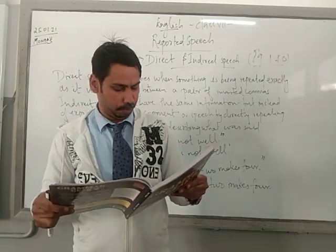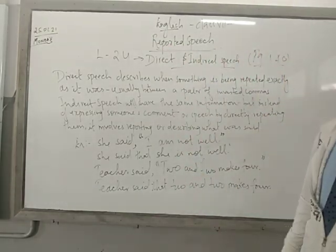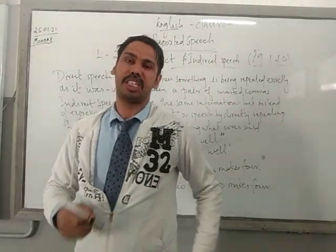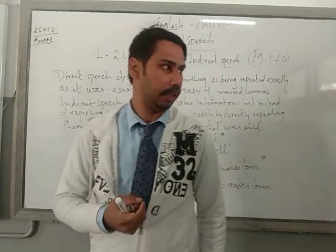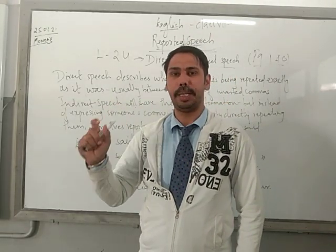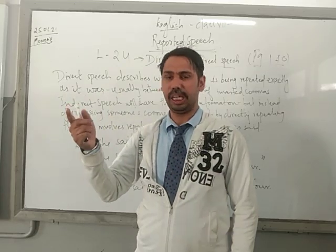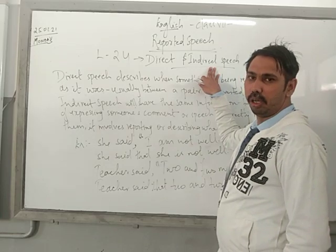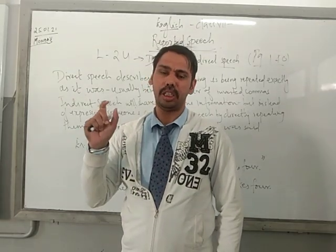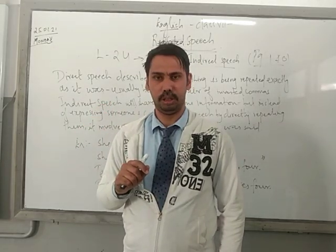Cambridge Grammar Gear book, page number 140: direct and indirect speech, that is reported speech. The statement of the speaker — when any statement is spoken by the speaker, his or her statement when it is reported, it is called indirect speech. That speech is always written within double inverted commas.